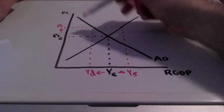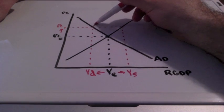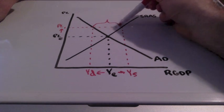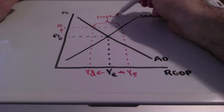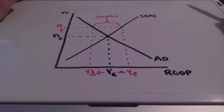So what we have here is a surplus. We have an excess supply of goods and services. Inventories are starting to build up.